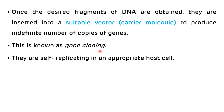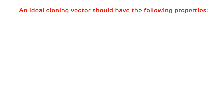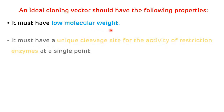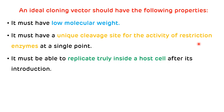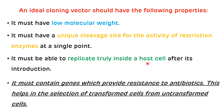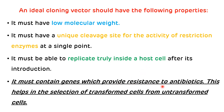Vectors are self-replicating in appropriate host cells. Now we will see the properties of an ideal cloning vector. First, it must have low molecular weight. Second, it must have a unique cleavage site for the activity of restriction endonuclease enzyme at a single point. Third, it must be able to replicate truly inside the host cell after its introduction. The last and important property is it must contain genes which provide resistance to antibiotics. This helps in the selection of transformed cells from untransformed cells.